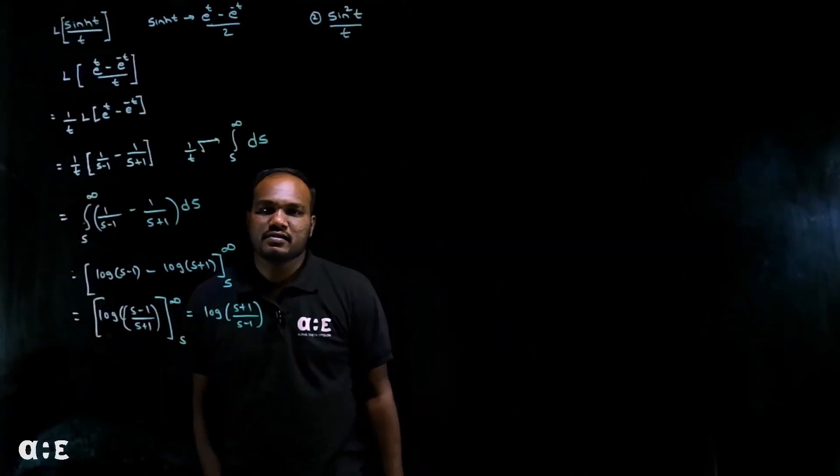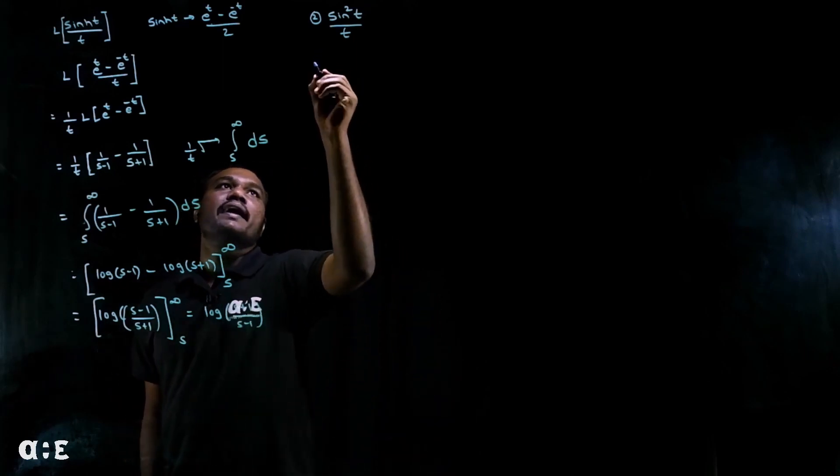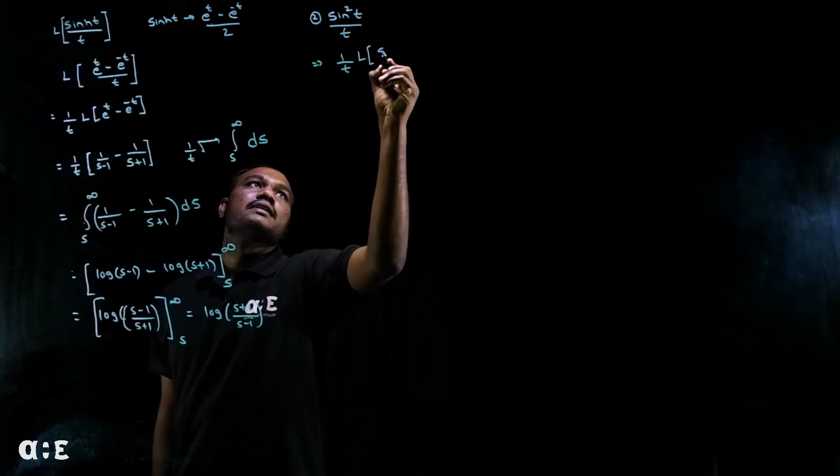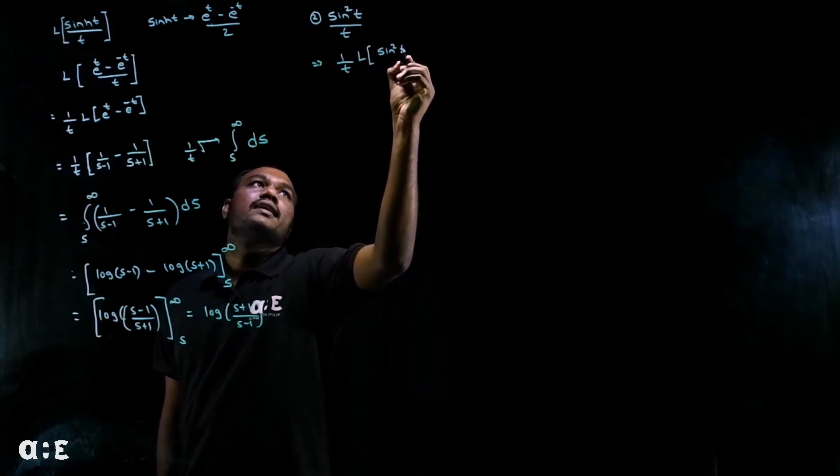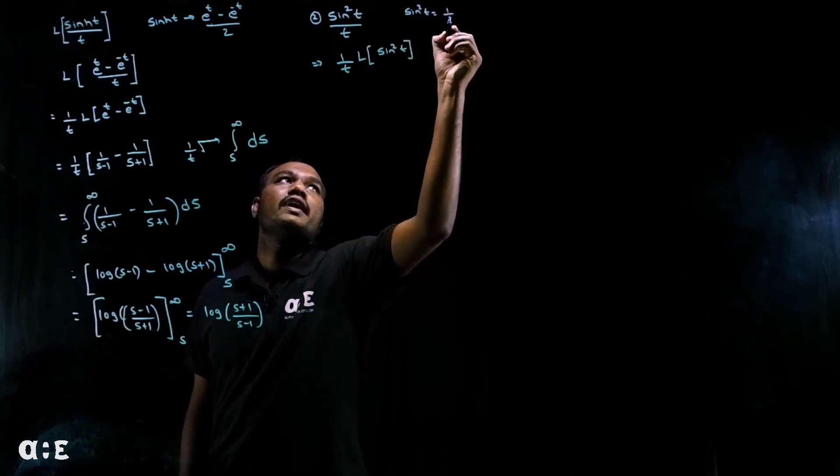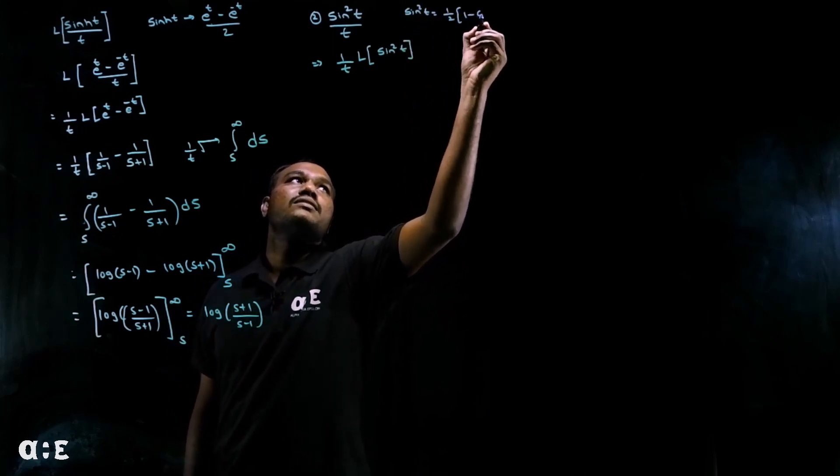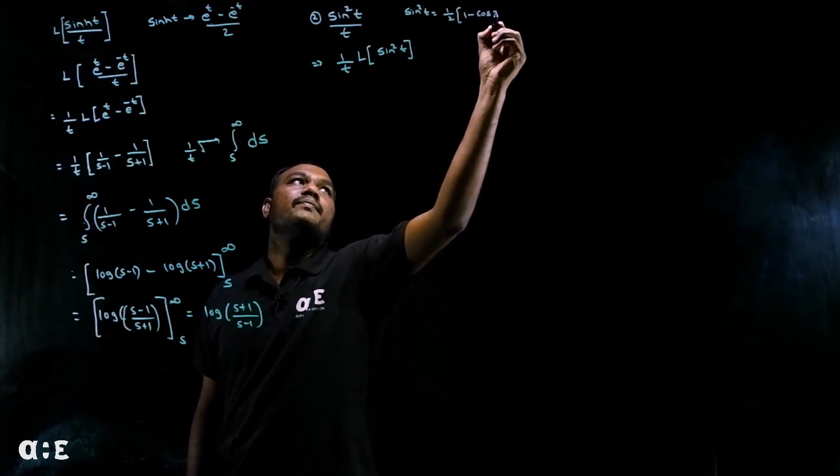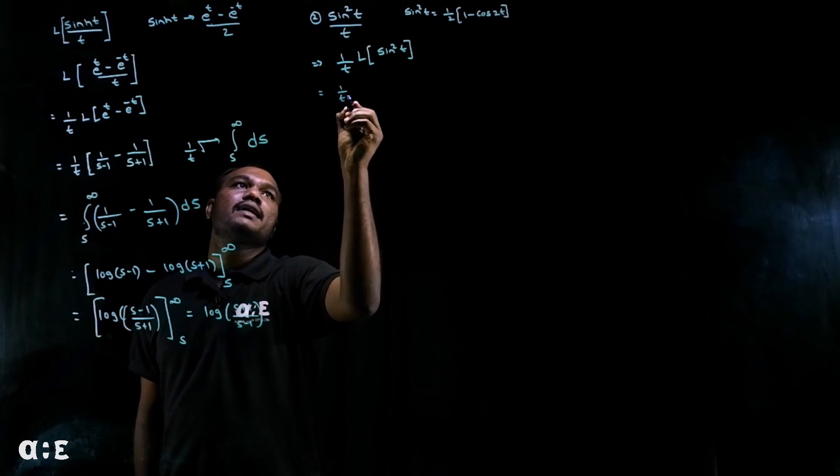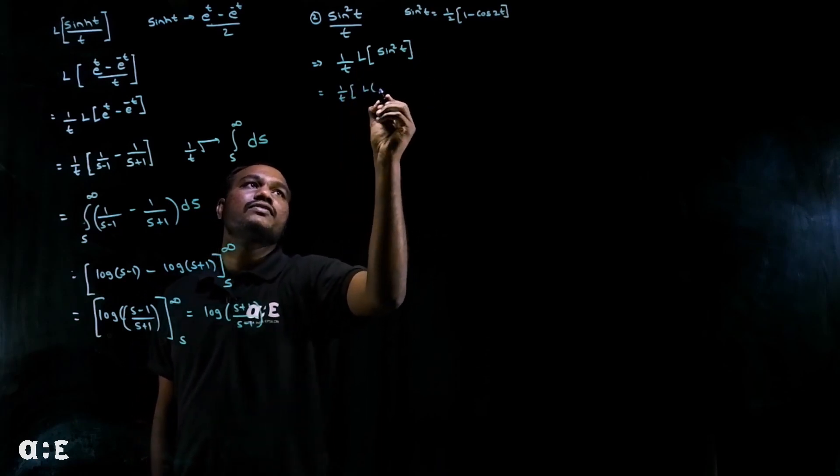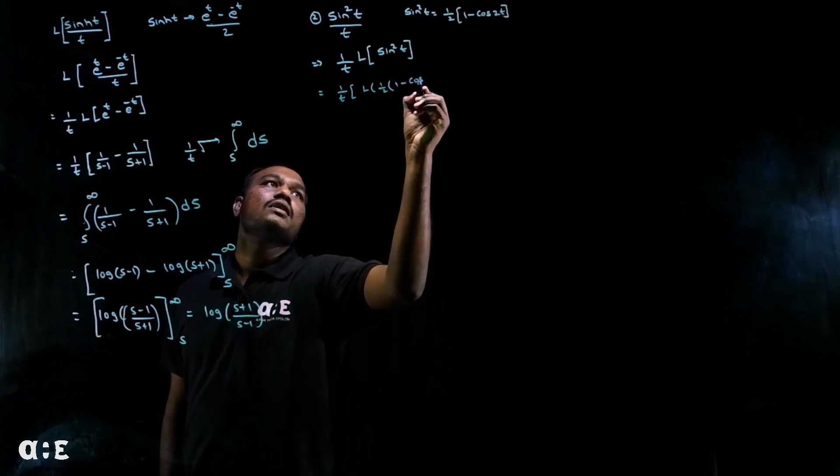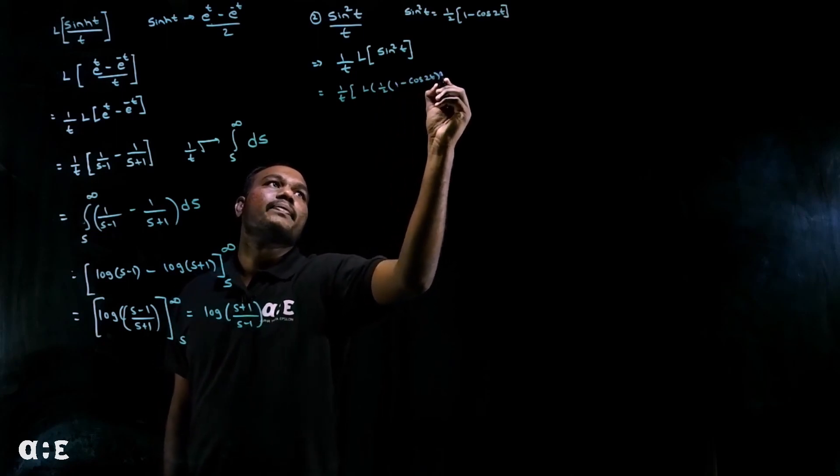We need to find Laplace of this term. So again, we need to take one by t outside, then we'll be left with Laplace of sine squared t. Sine square t can be written as half times 1 minus cos 2t. So let's replace that one by t. This can be written as Laplace of half times 1 minus cos 2t.